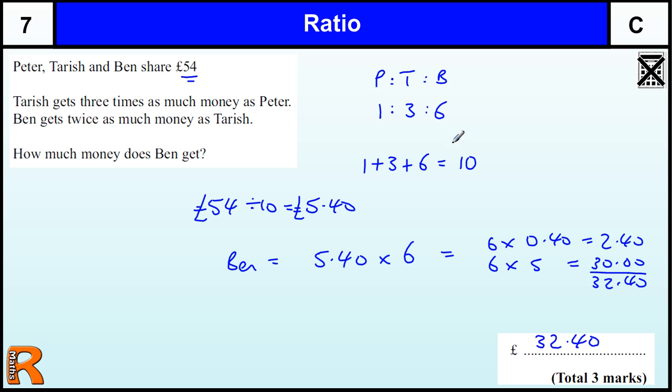So you would get marks for one for working out the ratio, so if you have this written down in some form, that's one mark, one mark for writing a calculation such as 5 pound 40 times 6, or 54 divided by 10 times by 6, something that shows that you know what you're doing, divided by 10 times by 6 to get the ratio, and then one for the answer. There we go.